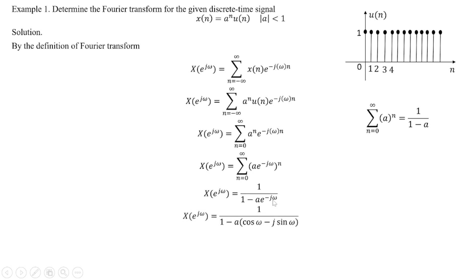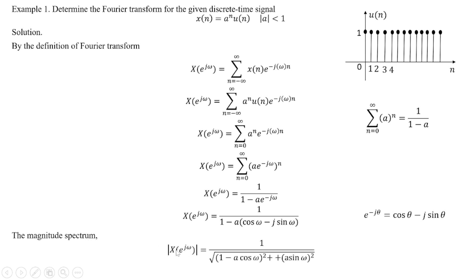Expanding e^{-jω} using Euler's formula: e^{-jθ} = cosθ - j·sinθ, so e^{-jω} = cosω - j·sinω. The magnitude spectrum is then |X(e^{jω})| = 1 / sqrt((1 - a·cosω)² + (a·sinω)²), where the real part of the denominator is (1 - a·cosω) and the imaginary part is a·sinω.